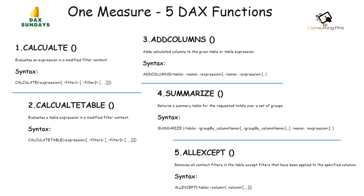On your screen right now you can see all five Dex functions that I am going to use in this video. The very first is CALCULATE, which is going to evaluate an expression in a modified filter context. Second is CALCULATETABLE, which evaluates a table expression in a modified filter context. Third is ADDCOLUMNS, which adds a calculated column to a given table or table expression. Fourth is the SUMMARIZE function, which returns a summary table for the requested totals over a set of groups. Lastly, we are also going to use ALLEXCEPT, which removes all context filters in the table except filters applied to the specified column.